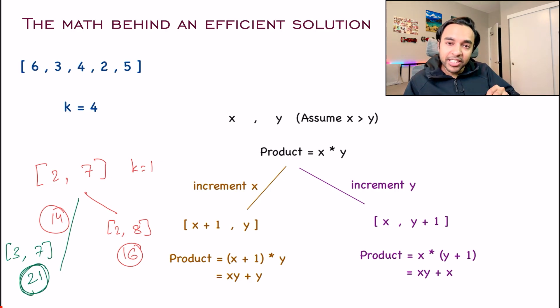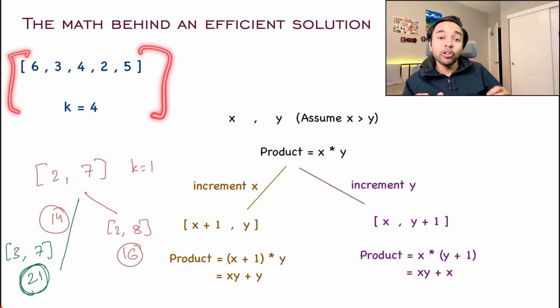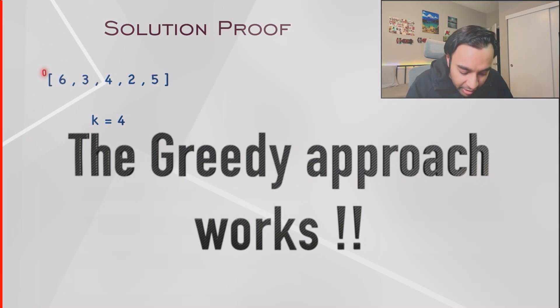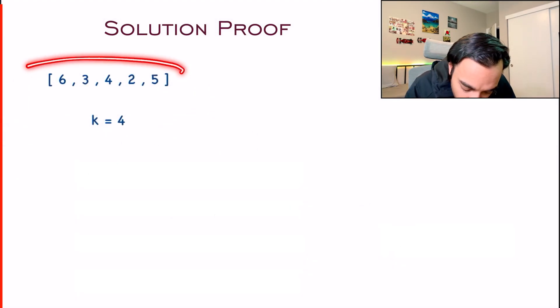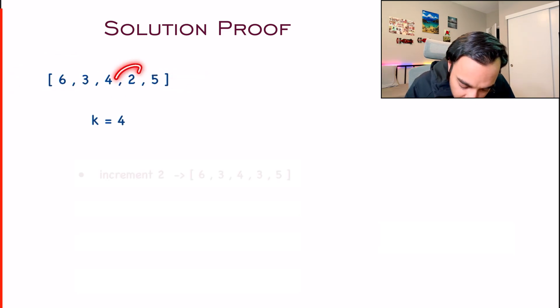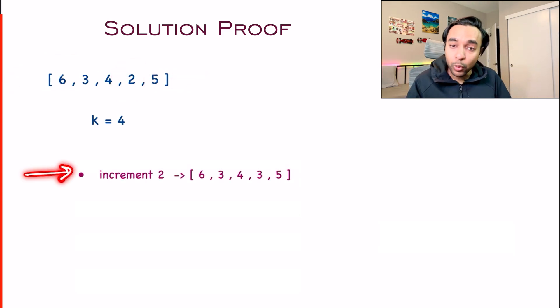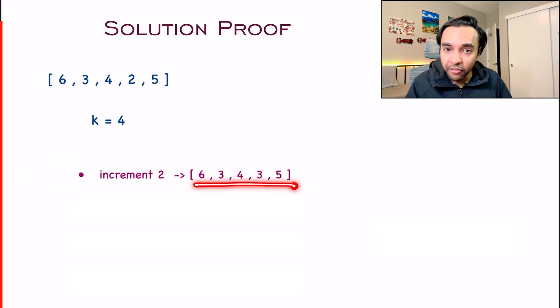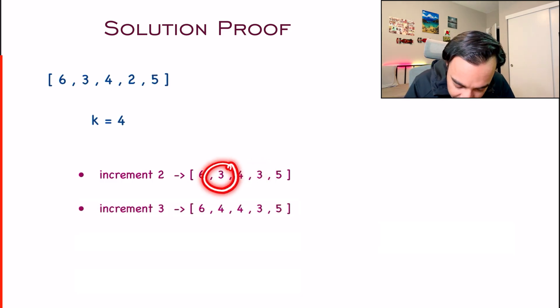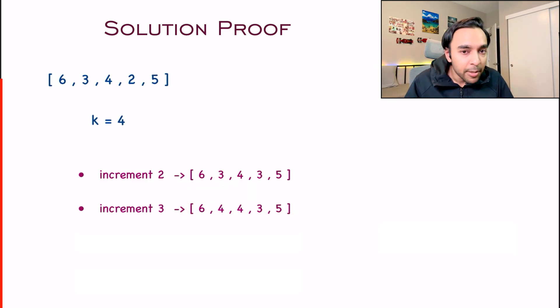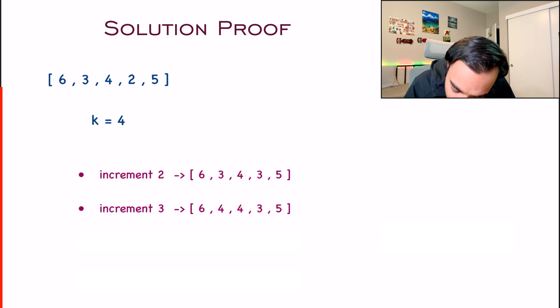So based upon this idea, how will the solution of this particular test case look like? I have my test case over here, right? And the value of k is 4. So what do you do? You pick up the smallest number possible in this. The smallest number possible is 2. So for the first step, I will increment 2 and my array becomes [6,3,4,3,5]. This completes one operation. For the next operation, once again, you have to search for the minimum element. You have two 3s available. You can pick any one of them. I pick the first one and then I increment it. As soon as I increment, my array becomes something like this. Once again, repeat the same process. Find out the minimum element. It is 3. So for the next step, I will increment 3 again and my array starts to look like this.